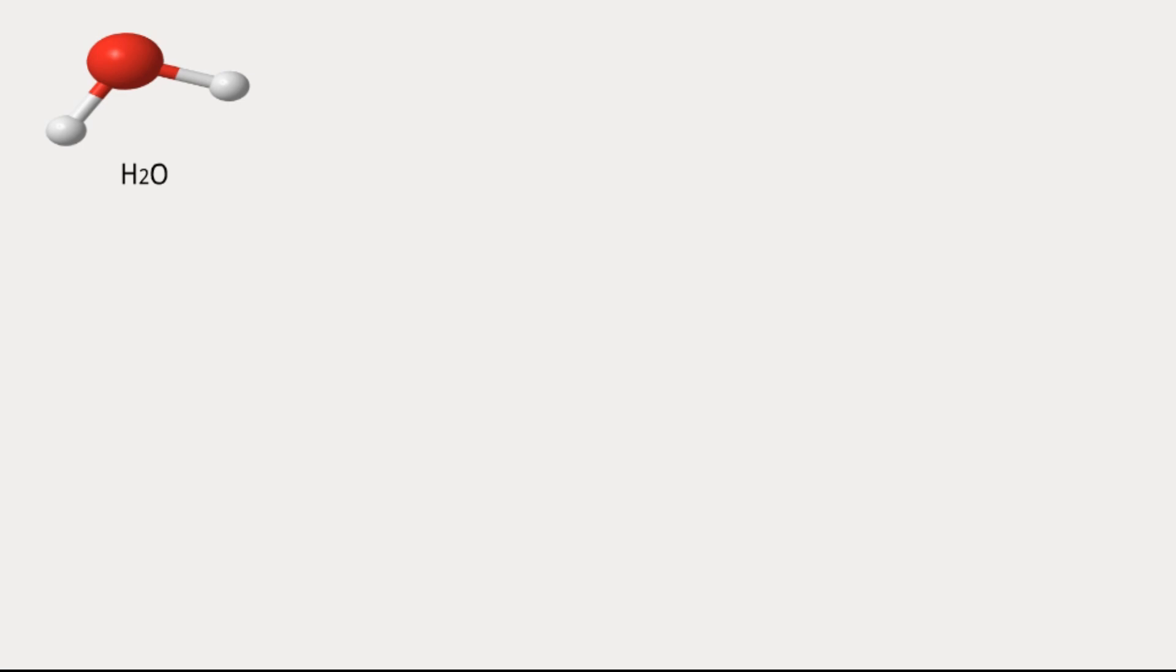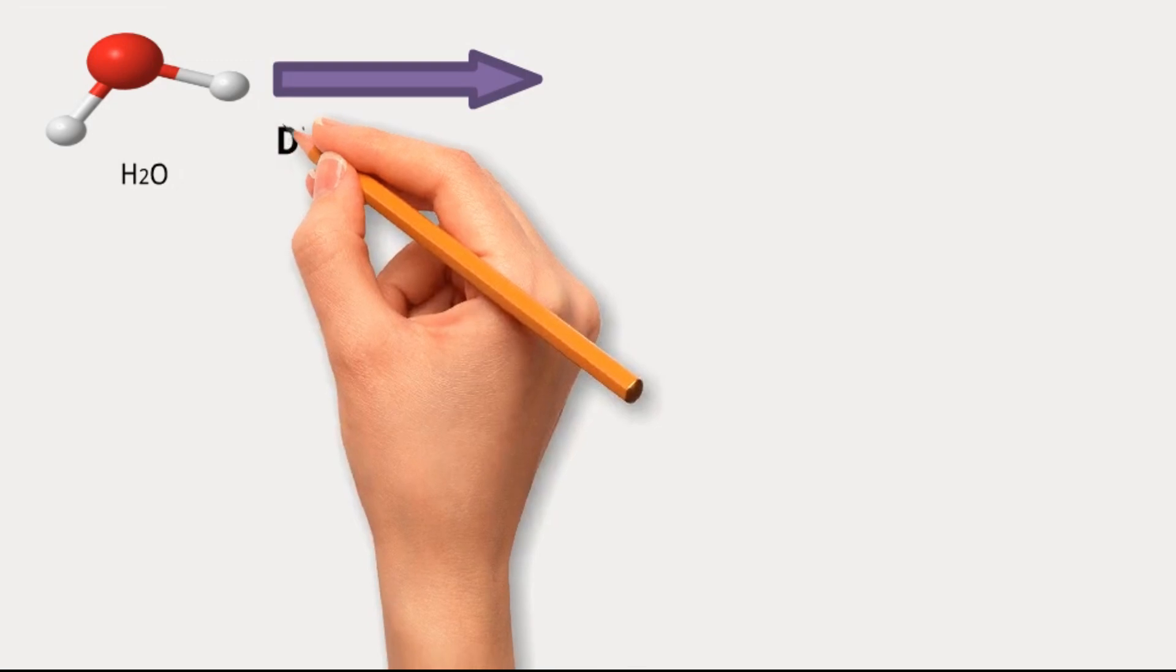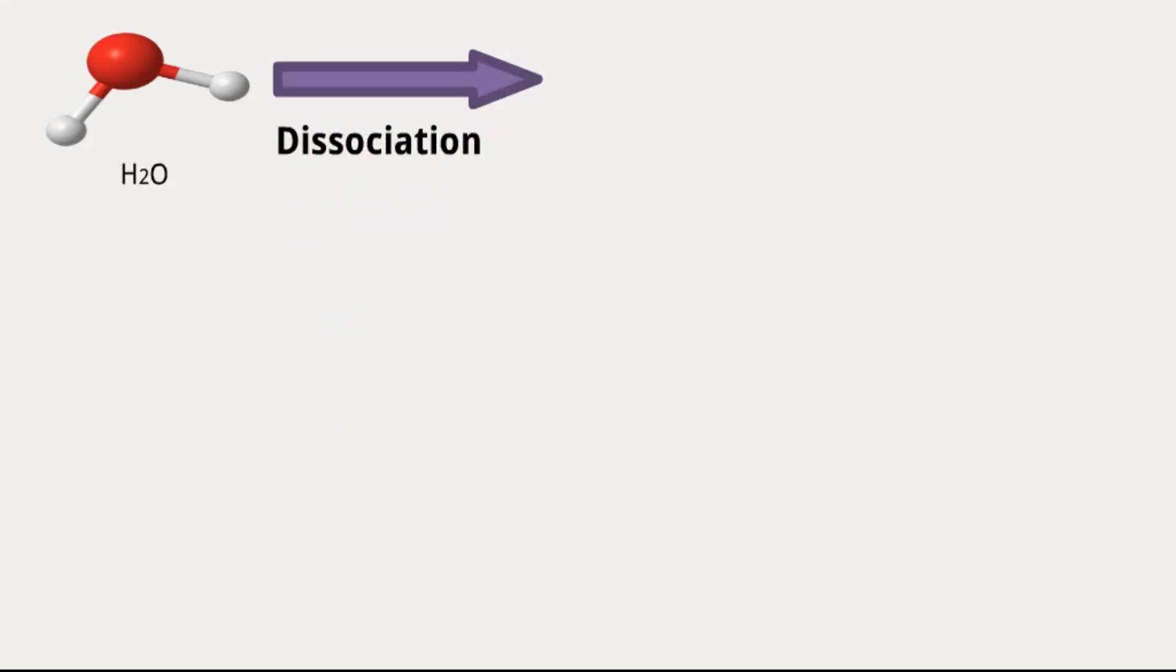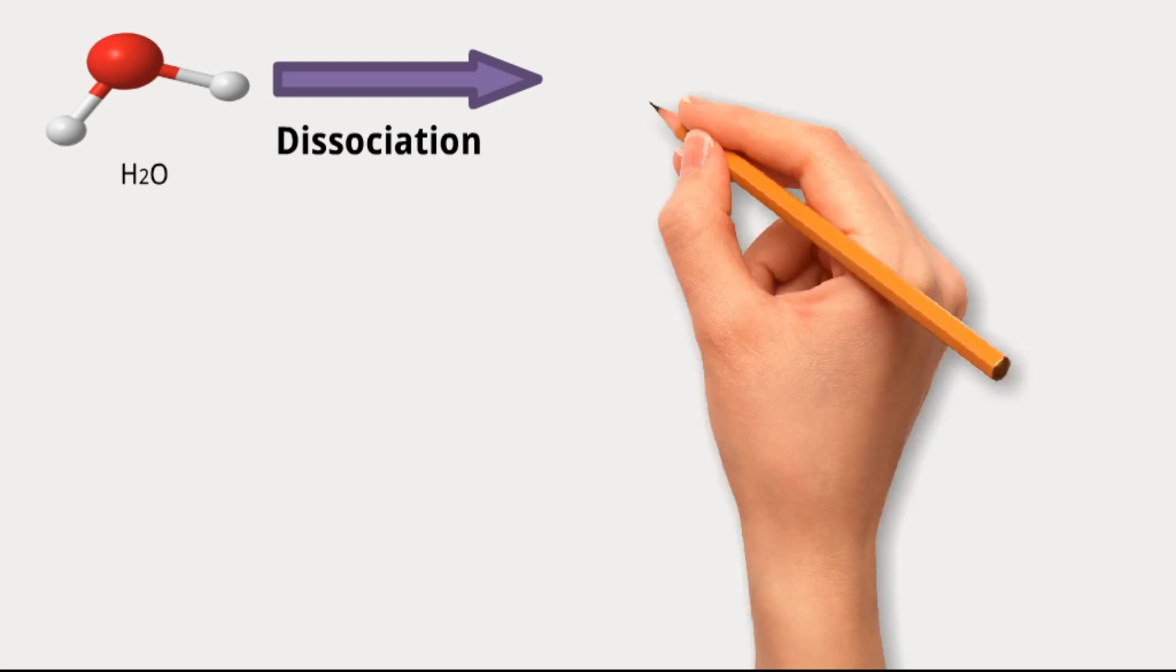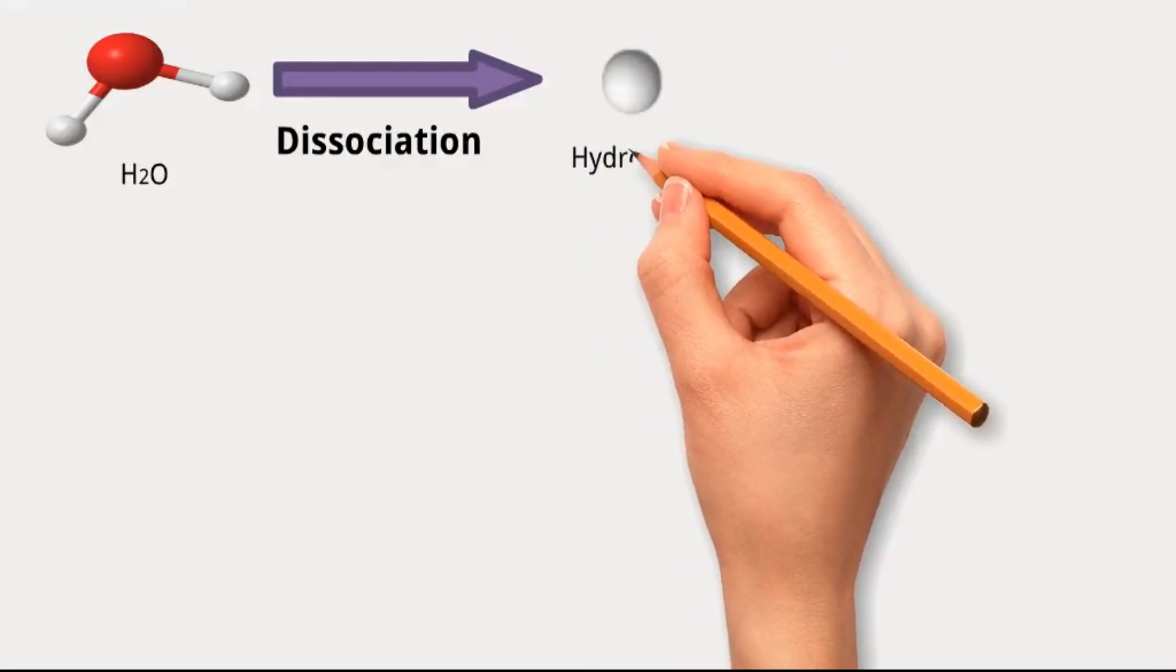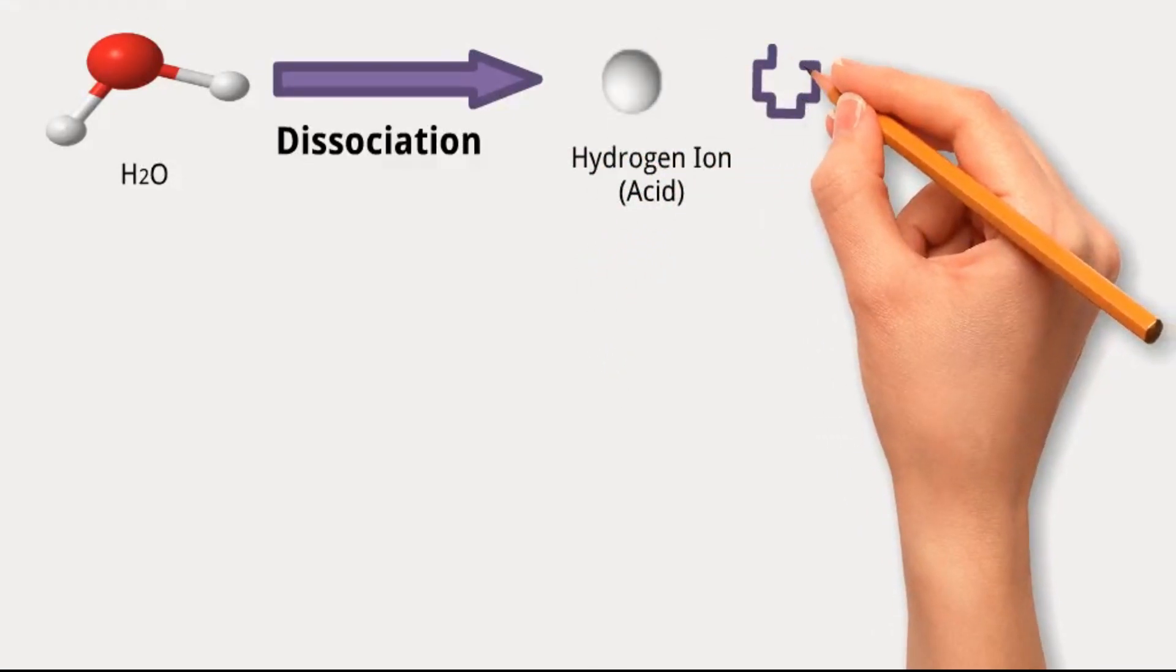Under certain conditions, this molecule can undergo a process called dissociation, where it temporarily breaks apart into ions. During dissociation, one of the hydrogen atoms loses its electron and becomes a positively charged ion called a hydrogen ion.